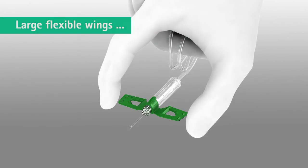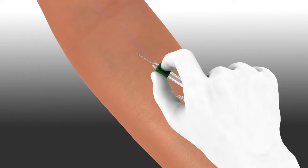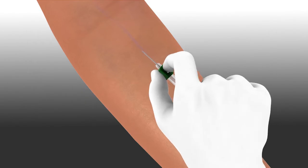The large, flexible wings on VinoFix Safety are interlocking and are designed with a special grip to allow for convenient handling and facilitate venipuncture.